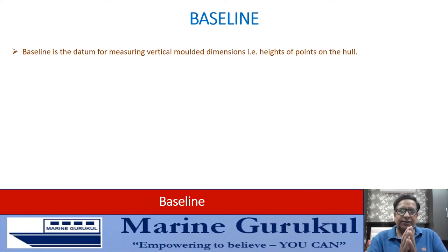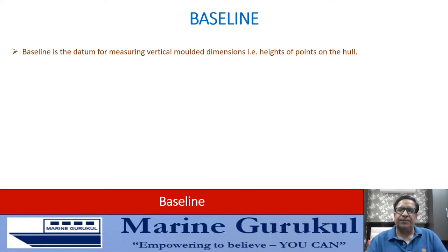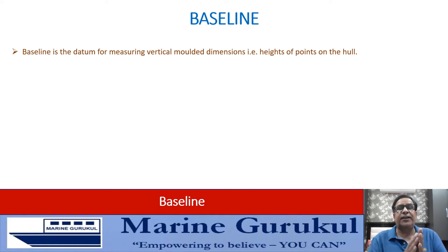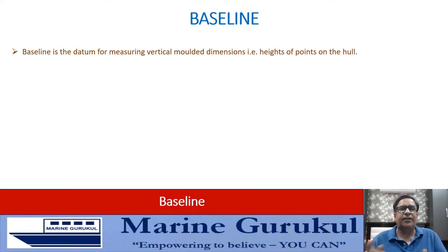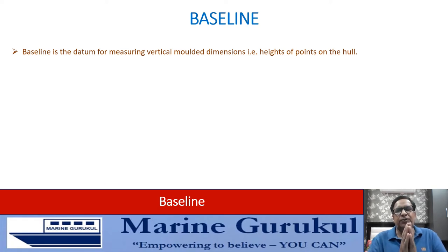The baseline is the datum or reference from which all vertical molded dimensions — the molded heights of different points on the hull — are measured. Molded dimensions do not include the thickness of the plating; they are measured from the inner side. Extreme dimensions include the thickness of the plating, measured from outer side to outer side. The baseline is a horizontal line drawn at the top of the keel plate.